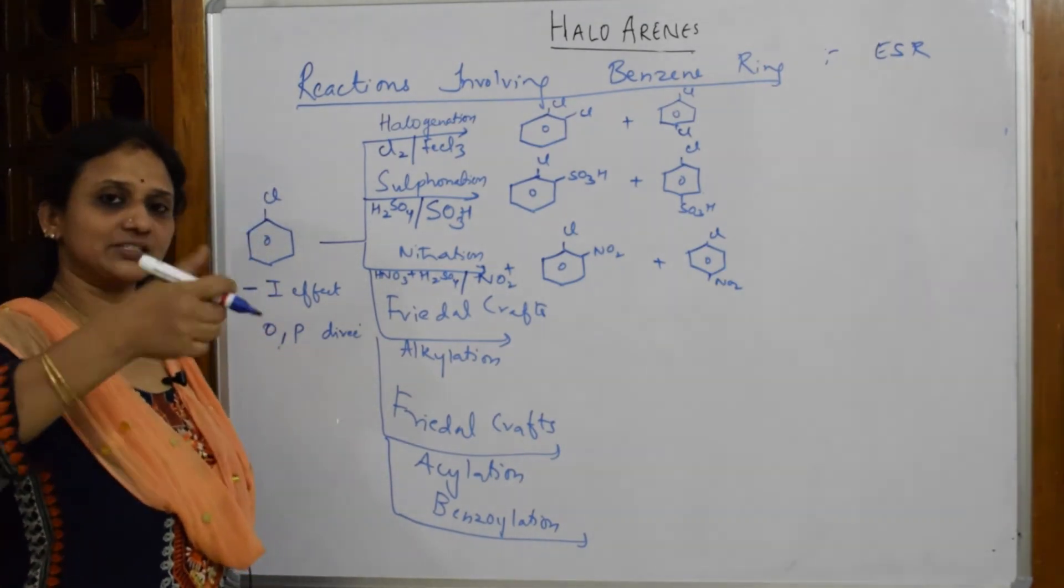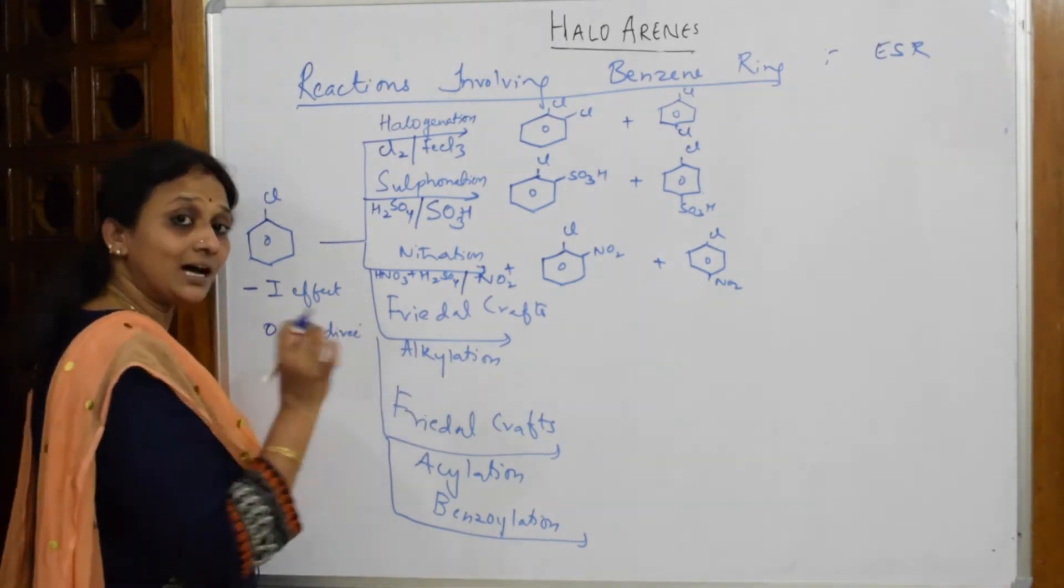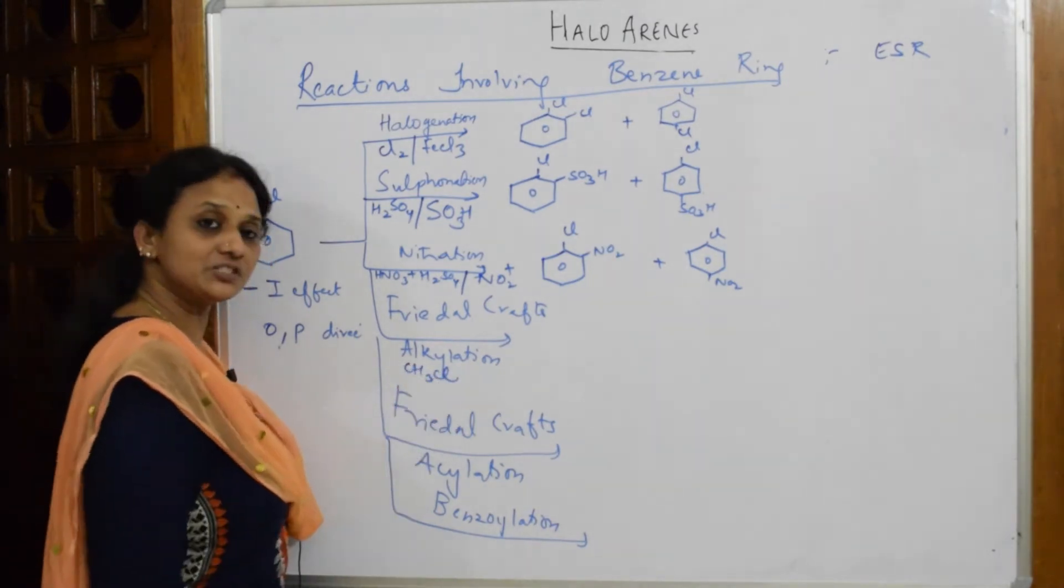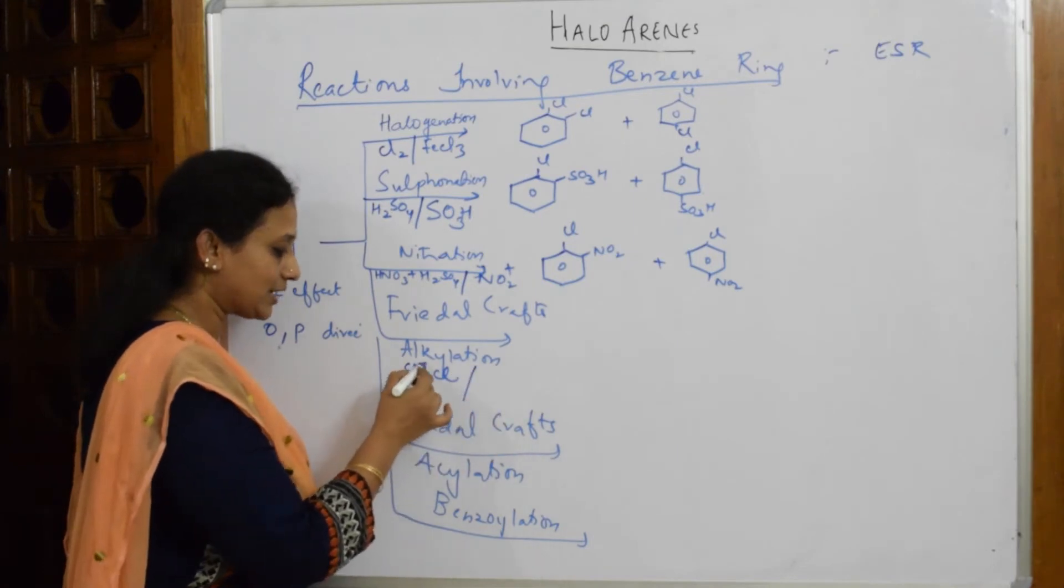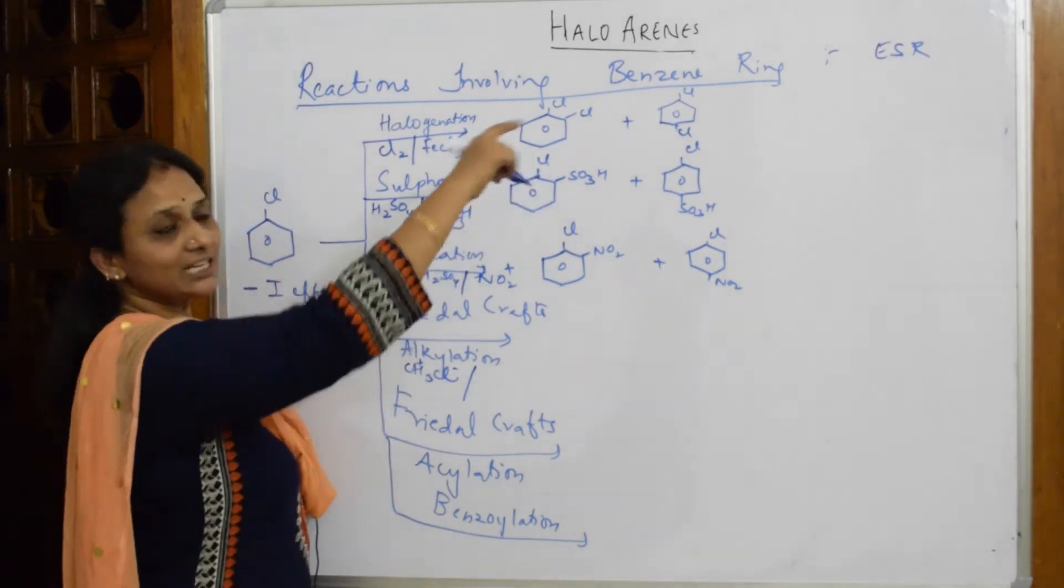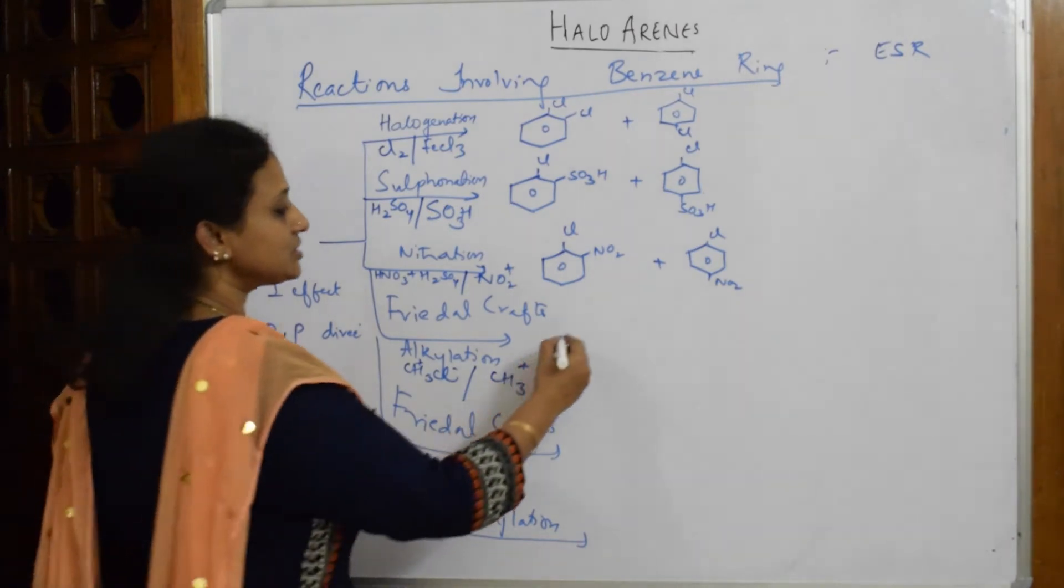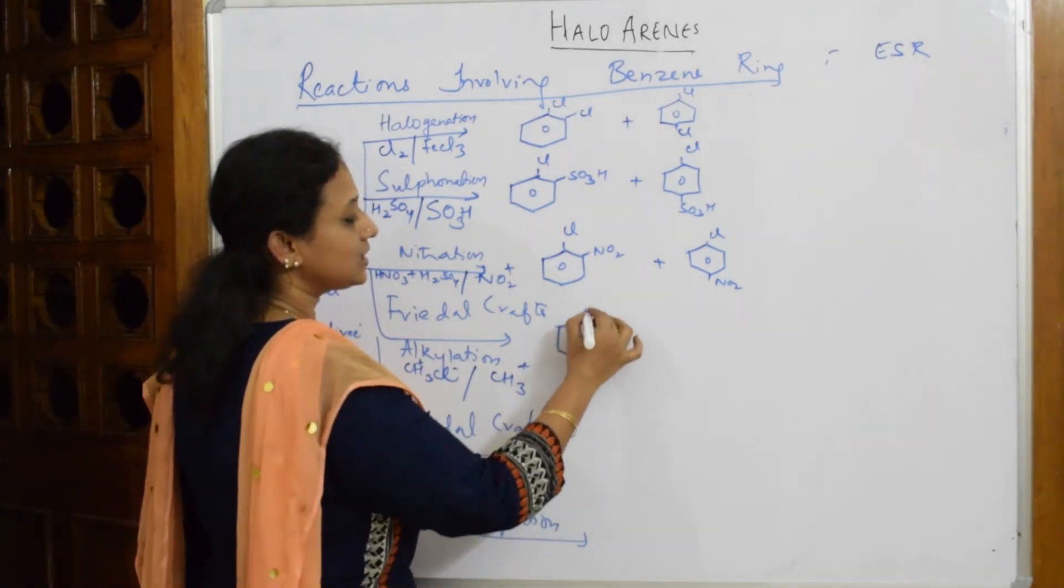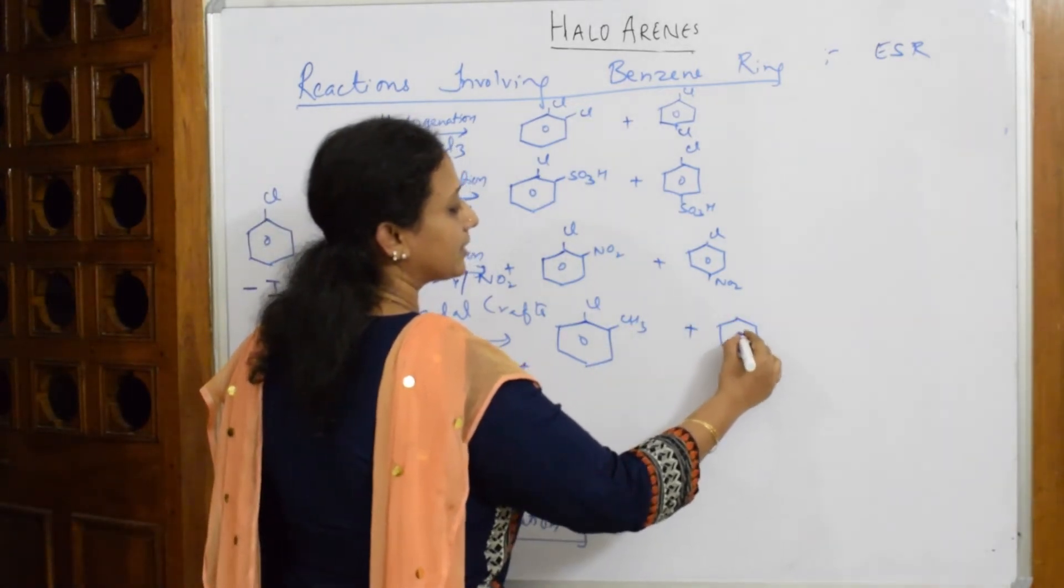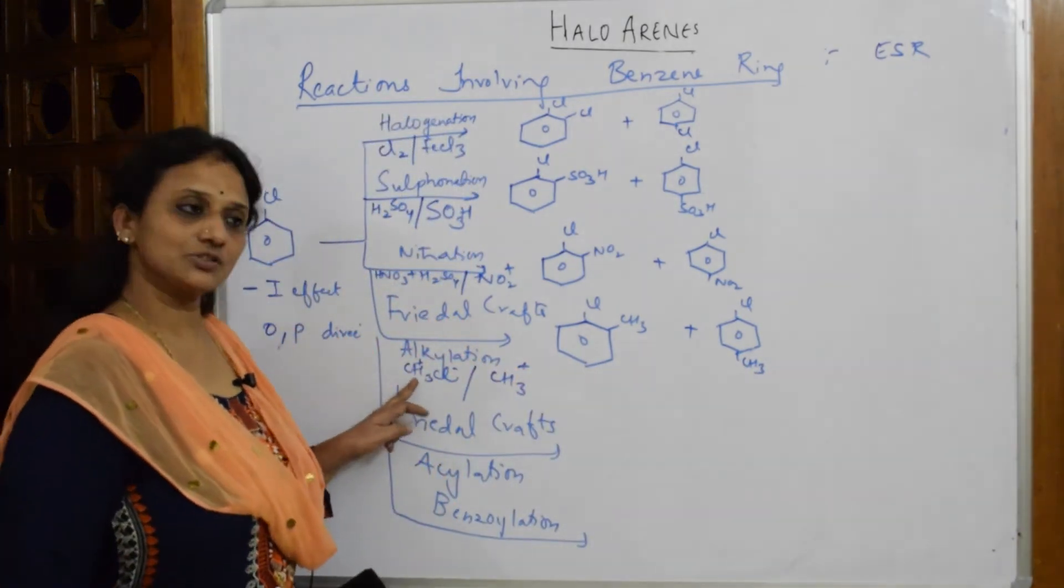Now in Friedel-Crafts alkylation, you're going to add alkyl group. CH3Cl in the presence of AlCl3. This CH3Cl will break up into CH3+ and Cl-. What is electrophile? CH3, because we are doing electrophilic substitution reactions. So CH3 is going to come and attack which positions? It's going to come and attack at Cl, CH3 ortho and CH3 para. Simple, both the sides because you should know the electrophile. This is the electrophile, so that's going to come and attack.